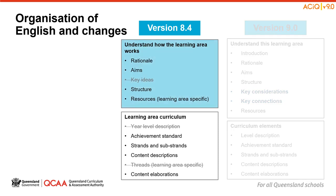In the organisation of the Australian Curriculum in Version 8.4, represented on the left, it is in two parts. The first is understanding how the learning area works, which includes the rationale, aims, key ideas, structure and resources. The second part includes specific elements about the learning area curriculum, such as the year-level description, the achievement standard, strands and sub-strands, content descriptions, threads and content elaborations.